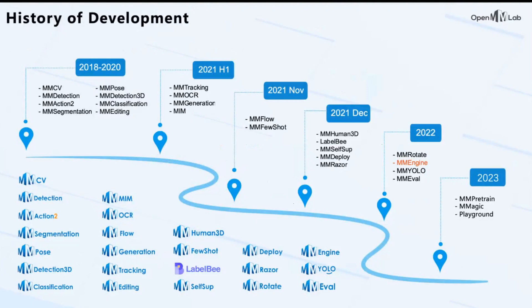OpenMMLab was first released in 2018. At that time, there were only two packages, MMCV and MMDetection. In the next year, four new codebases were developed. In 2020, we supported more mainstream tasks such as classification, segmentation, and 3D object detection. In the past two years, we kept open sourcing toolboxes for new areas and closely collaborated with colleges and research institutes. In the future, we will extend OpenMMLab to multi-modality learning and language models, and more new projects are coming.